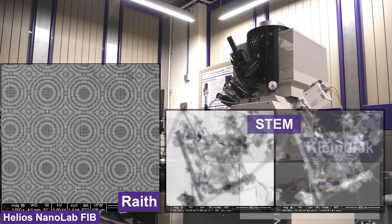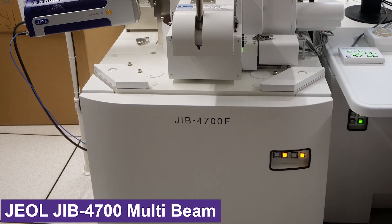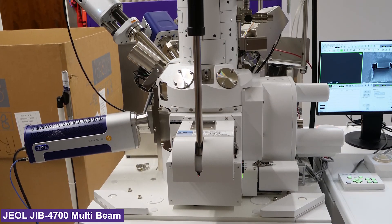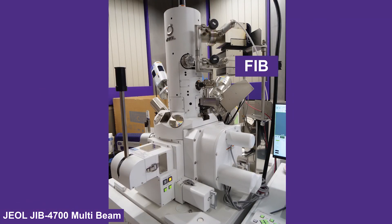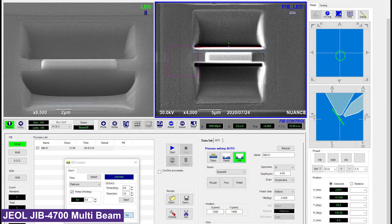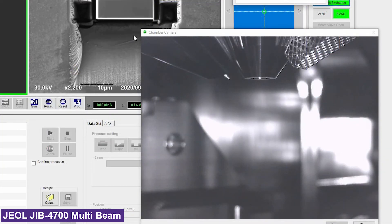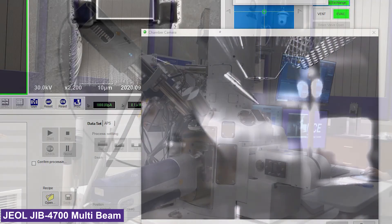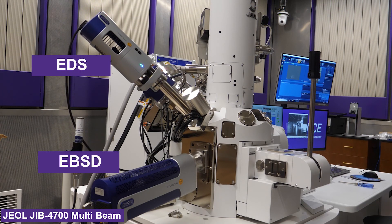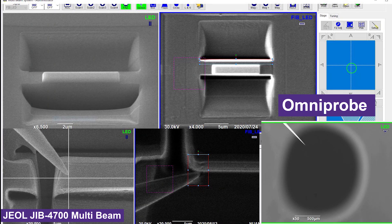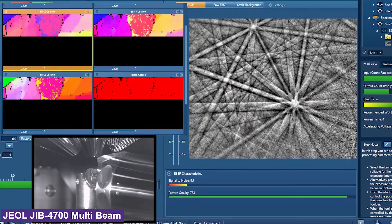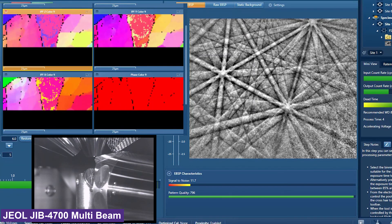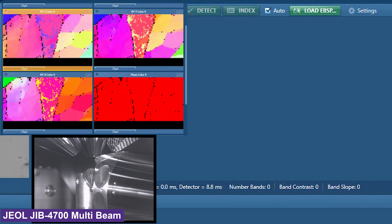This is the JEOL JIB 4700F multi-beam system. This is the newest microscope in the EPIC lab. Like the Helios, this has a gallium-sourced ion beam as well as a Schottky emission electron gun. It can perform TEM and atom probe sample preparation. It includes a gas injection system which can deposit platinum or carbon. It has an EBSD detector, an EDS detector, and a high-stability Oxford Omniprobe 400. The new Oxford Symmetry CMOS EBSD detector can operate at over 3000 index patterns per second. This instrument can also perform 3D EBSD, which is a new technique in the EPIC facility.